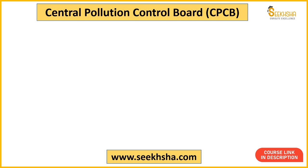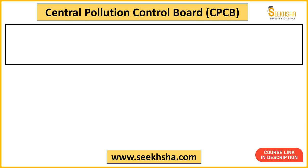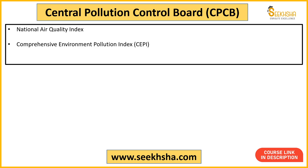First of all, Central Pollution Control Board reports — which is a central organization. It releases the National Air Quality Index, Comprehensive Environment Pollution Index, and National Ambient Air Quality Index. These cover air and environment pollution. I am noting these exactly as written in the previous lectures.